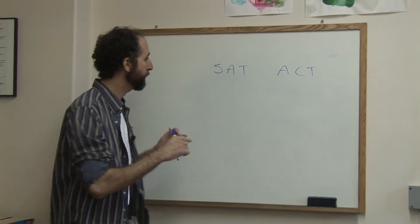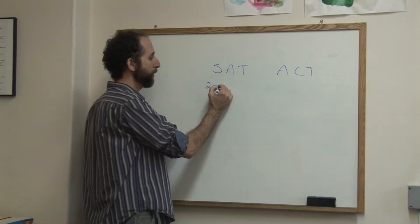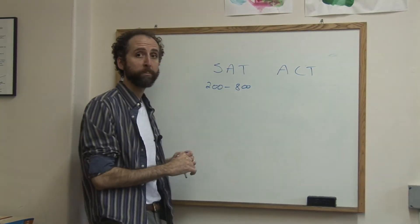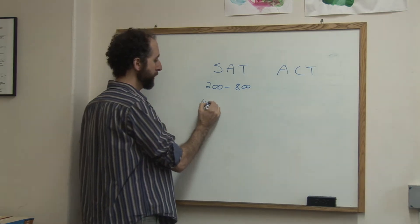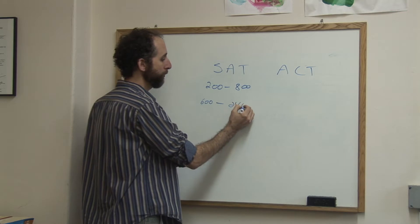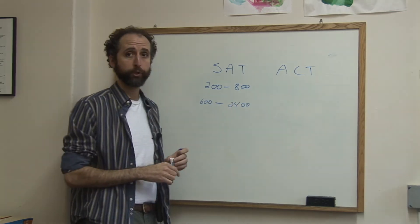So the average score - first of all, SAT scores go from 200 to 800, and you have three sections on your SAT, so your total score is usually 600 to 2400, 2400 being a perfect score.